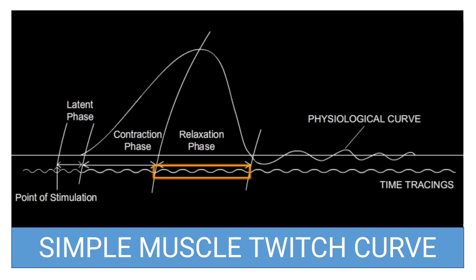What are the different phases of this curve? The first phase is the latent phase — from the point of stimulation to the onset of contraction. This gap is known as the latent phase. Then we have the contraction phase, and then the relaxation phase. So mostly we have three phases: latent phase, contraction phase, and relaxation phase.